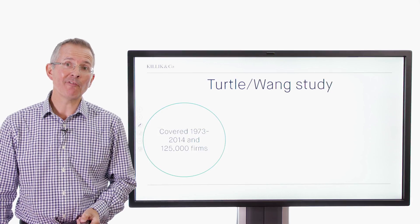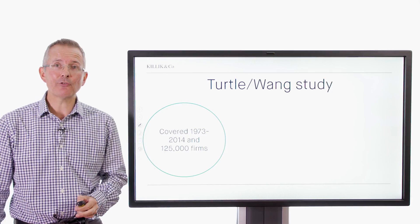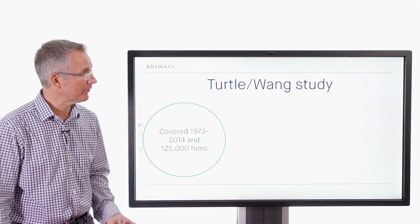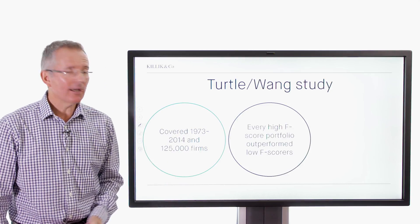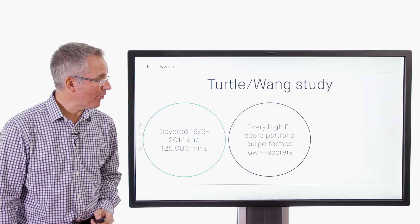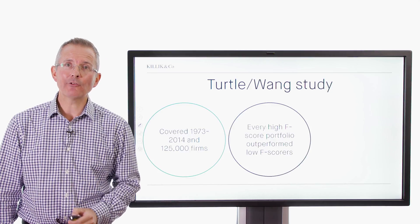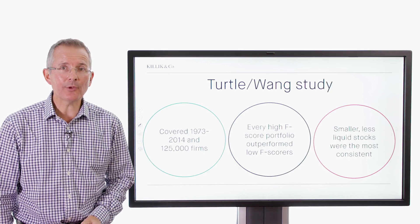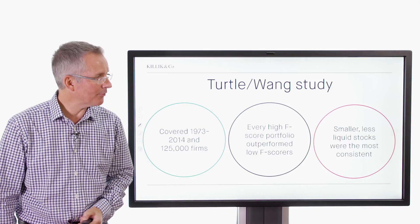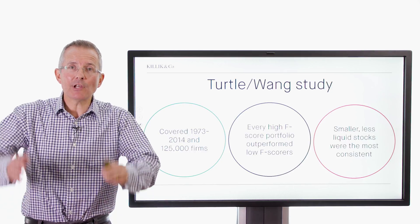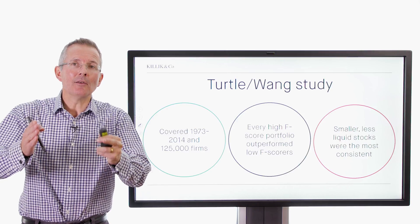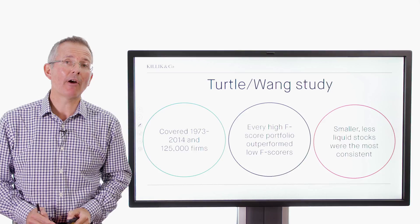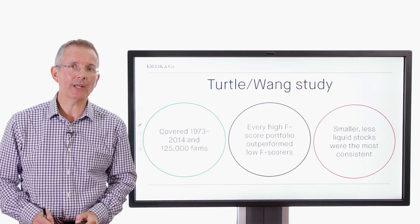This covered 125,000 firms between 1973 and 2014. Translation: big coverage, both in terms of the number of companies and the period looked at. And essentially, they decided or concluded that every high F-score portfolio outperformed low F-score equivalents. So that's pretty conclusive. And it's particularly strong where you've got smaller, less liquid stocks, where you've got informational inefficiencies, for example, liquidity premiums and so on. So actually, the place this really can show up as a good way to screen stocks is in the kind of smaller cap environment, potentially. That was one of the conclusions they reached.